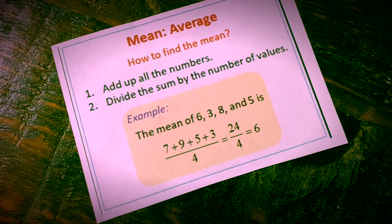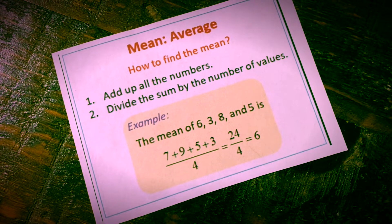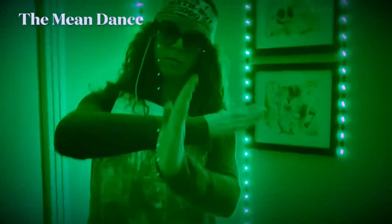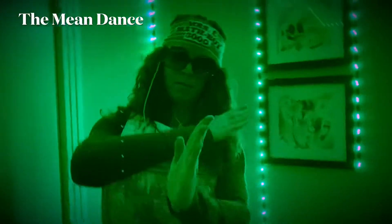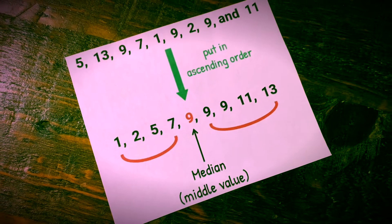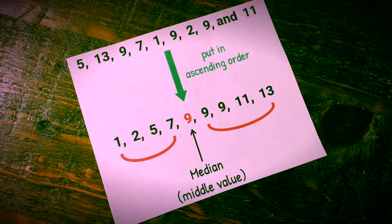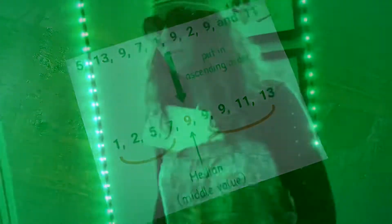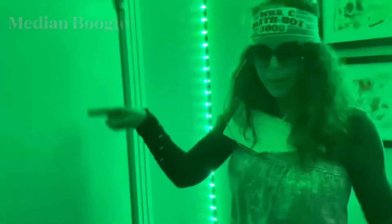Mean — here's a guide: add them up and then divide. Median — that's the one you order them until you're done. When you find the middle one, that's how you find the median.